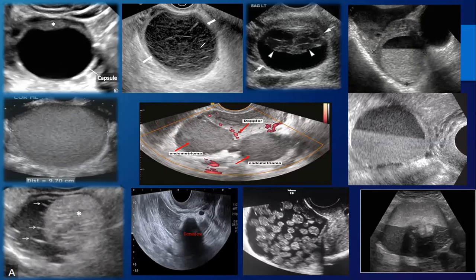Then in the second part we discussed more complicated things — the hemorrhagic cyst. It has three appearances. It can be lacy, where the lines are connected to each other and reach the wall. It can also show clot retraction, and importantly there is no vascularity. Or it can be a fluid level, where the dense sediment is in the lower part and the upper part is completely anechoic or black. In contrast, the endometrioma is gray.